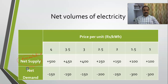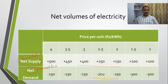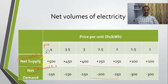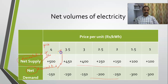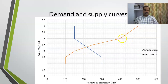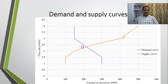We call these the accumulated demand and accumulated supply. Once we have these values, we draw a curve between price and accumulated supply — this gives us the supply curve — and a curve between price and accumulated demand, which gives us the demand curve. I have drawn this: here is the supply curve with price on one axis and volume of electricity on the other, and here is the demand curve.